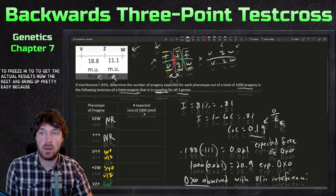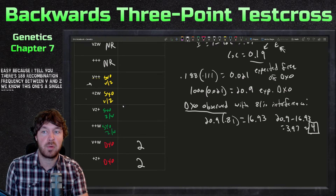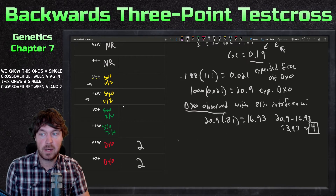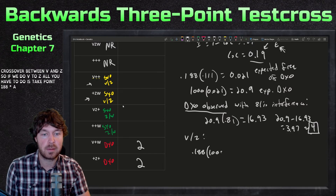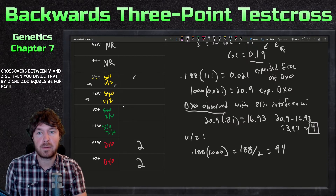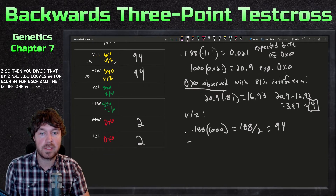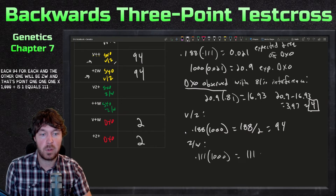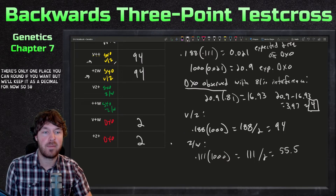Next, for the single crossovers between v and z: recombination frequency is 0.188, so 0.188 × 1,000 = 188 total. Divided between the two single crossover classes that's 94 for each. For single crossovers between z and w: 0.111 × 1,000 = 111 total, divided by two gives 55.5 for each class. The decimal is fine — you can round if needed but we'll keep it.